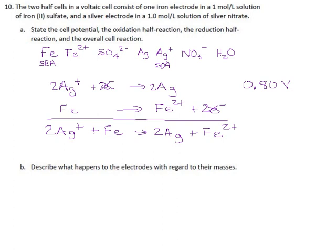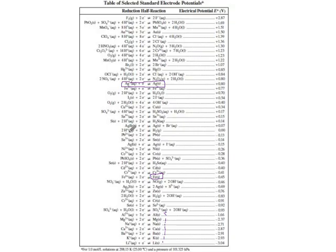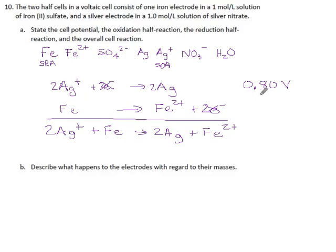And for the iron reaction, down here, as written, this is minus 0.45 volts. But because we flipped it, we get positive 0.45 volts. And when you add those together, your total voltage is the sum of those 1.25 volts.